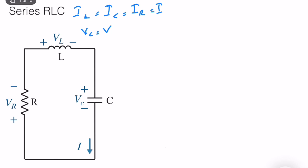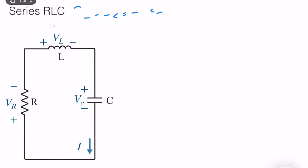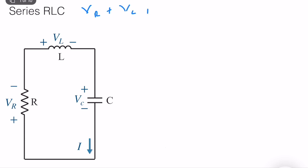In the previous case we found the ODE with respect to the inductor current; now we are using capacitor voltage. Let's write the KVL equation: V_R plus V_L plus V_C is equal to zero.